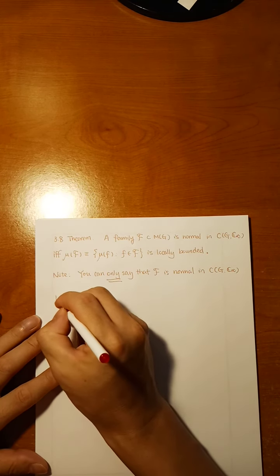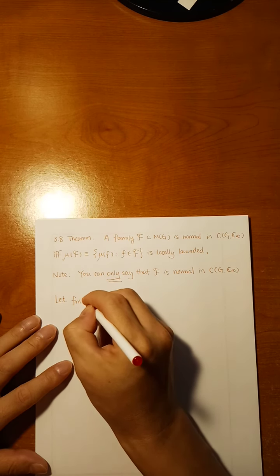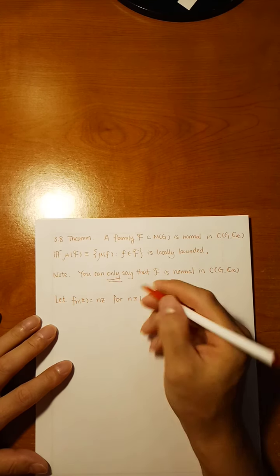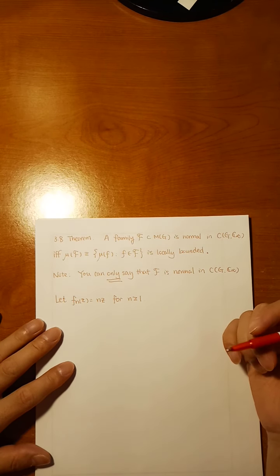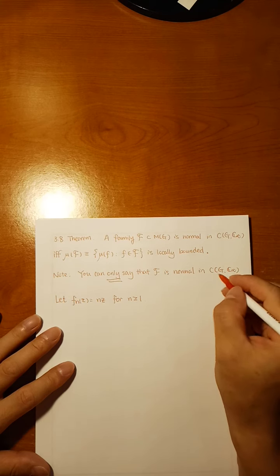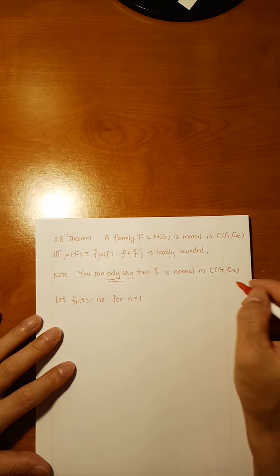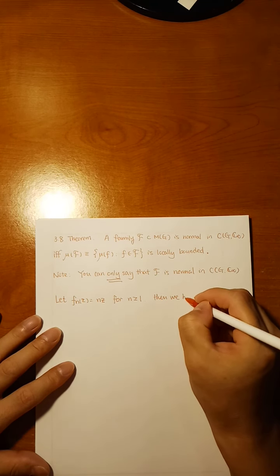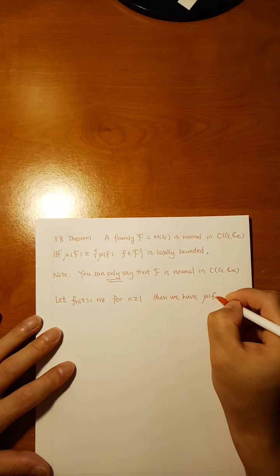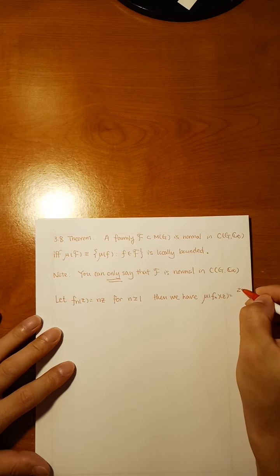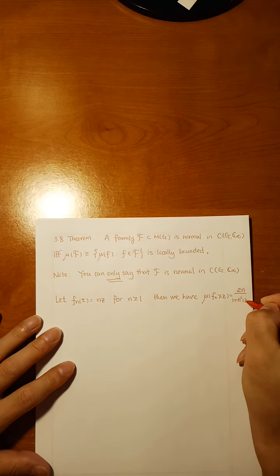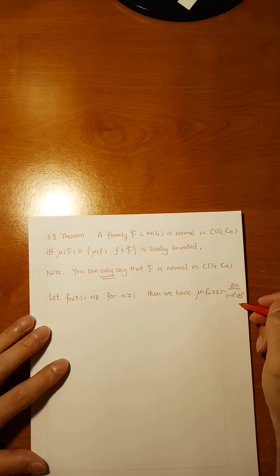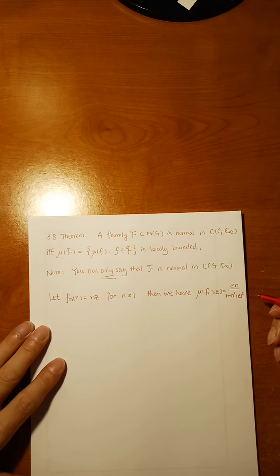The example is: let F_n(z) = n·z for n ≥ 1. So you have a sequence of analytic functions. Analytic functions are not closed in C(G, C∞) — they are closed in C(G, C) but not in C(G, C∞). Then μ(F_n(z)) = 2n / (1 + n²|z|²).